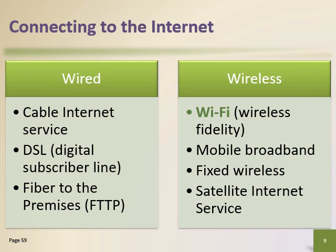Cable internet provides high-speed access through the cable television network using a cable modem. DSL provides high-speed internet through the telephone line using a DSL modem. Fiber optic uses a fiber optic cable to provide high-speed internet. Wi-Fi uses radio signals for computers and devices with built-in Wi-Fi capability. Mobile broadband offers high-speed internet over cellular networks via 3G, 4G, or 5G. Fixed wireless uses a dish antenna on a building communicating to a tower, and satellite internet uses a satellite dish connected to a satellite modem.